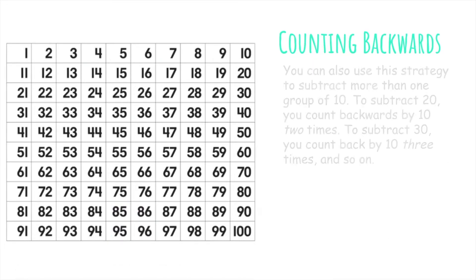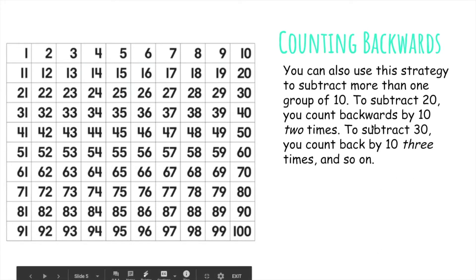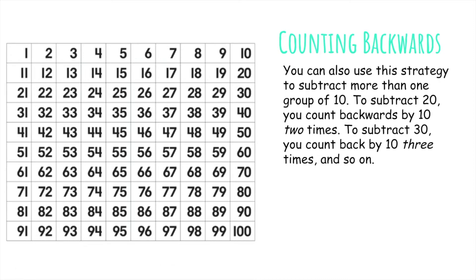Let's do it again, but this time we can use this strategy to subtract more than one group of 10. For example, to subtract 20, you can count backwards by 10 two times, because there is a 2 in the tens place of 20. And if we wanted to subtract 30, we can count back by 10 three times, and so on.